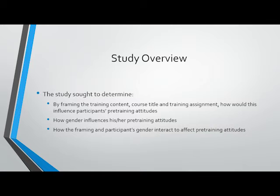As you can see below, by framing the training content, the course title, and the training assignment, how would this influence participants' pre-training attitudes? We'll get into more detail about how these three are changed throughout the framing process. Furthermore, how would gender influence pre-training attitudes, and how would the training and participants' gender interact to affect pre-training attitudes?